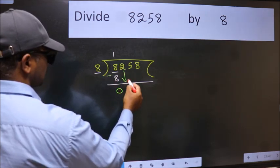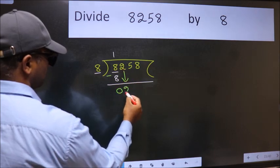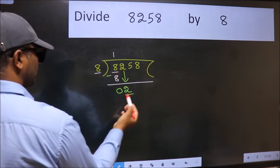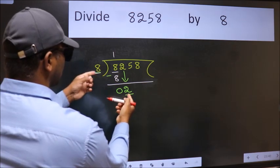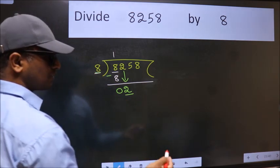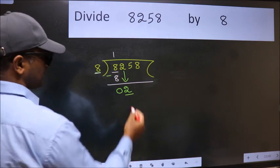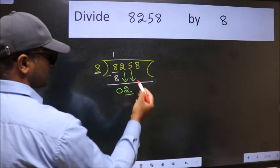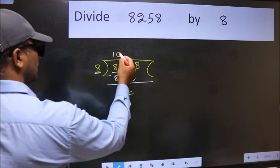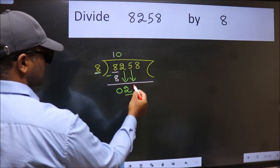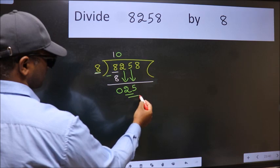After this bring down the beside number. So 2 down. Now here we have 2 and here 8. 2 is smaller than 8, so we should bring down the second number. And the rule to bring down the second number is put 0 here. Then only we can bring this number down. So 25.